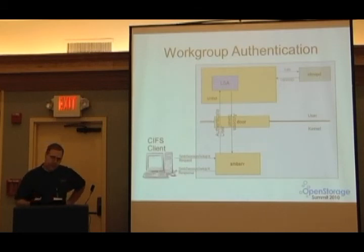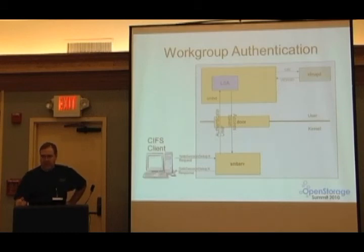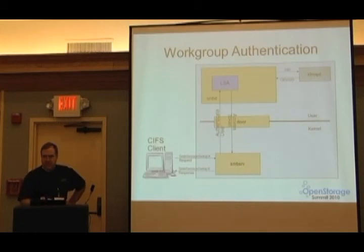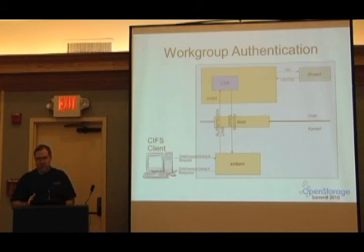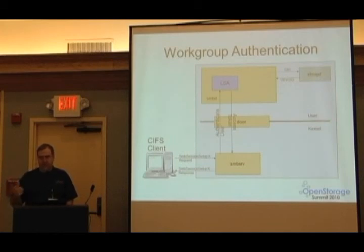The user-level process has a local representation of accounts — a list of groups and so forth. It goes to ID map and gets UIDs and GIDs for those SIDs, then builds the token in a form that has ephemeral ID representations of all the Windows-style SIDs it needs to represent. This is a concession to the legacy authentication infrastructure within the operating system, so we didn't have to change everything that expects an identity to be a 32-bit number. ID map maintains a cache of 32-bit numbers in the high half of the 32-bit ID space.